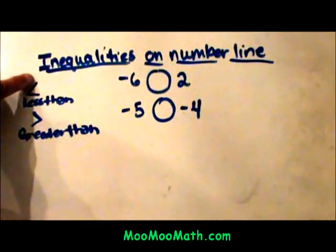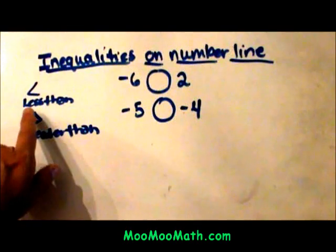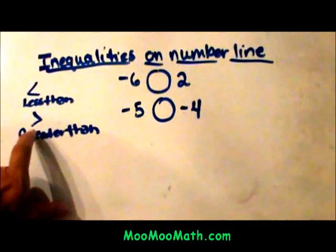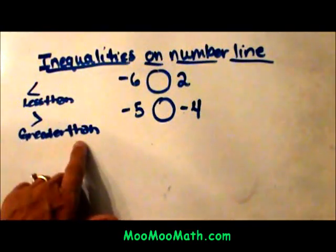The way I remember these is the less than symbol actually looks like an L, L for less than. The greater than does not look like an L, so it can't be an L, so that one is the greater than symbol.